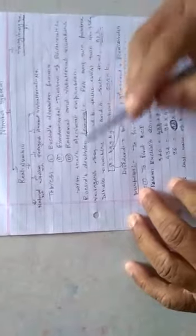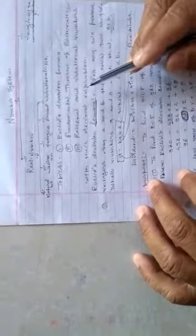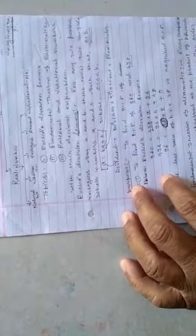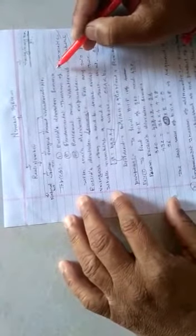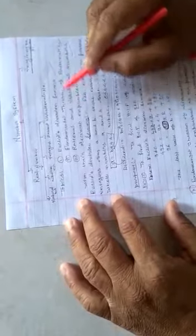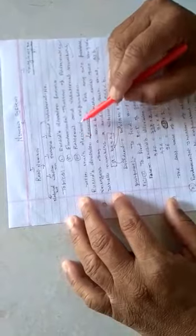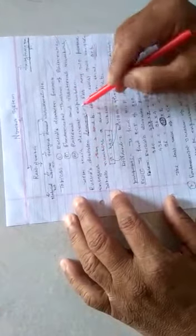This chapter mainly consists of three topics. Number one, Euclid's division lemma. Number two, fundamental theorem of arithmetic. And number three, rational and irrational numbers with their decimal expansion. Mainly the topics which we have to discuss in this chapter are Euclid's division lemma, fundamental theorem of arithmetic, and rational and irrational numbers with their decimal expansion.